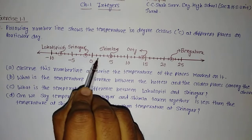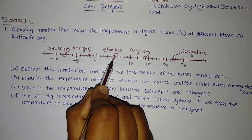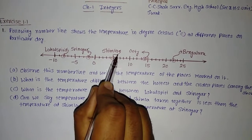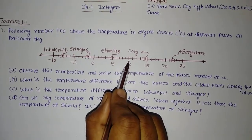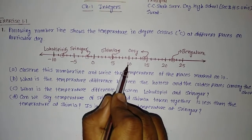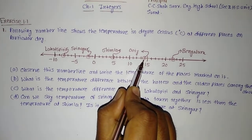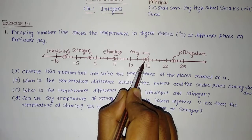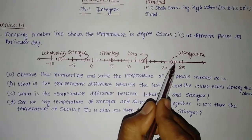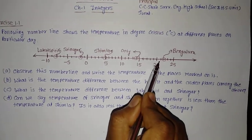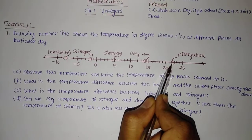Similar way, if we go ahead on the positive side — 1, 2, 3, 4, and 5 — so the temperature of Shimla is 5 degrees Celsius. Then the temperature of Uti will go above 10: it is 11, 12, 13, and 14. So the temperature of Uti is 14 degrees Celsius, that is positive 14. Then the temperature of Bengaluru — this is 20, so 21 and 22. So all these temperatures are mentioned here.